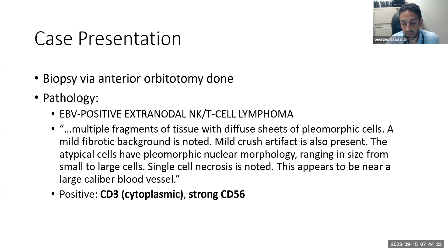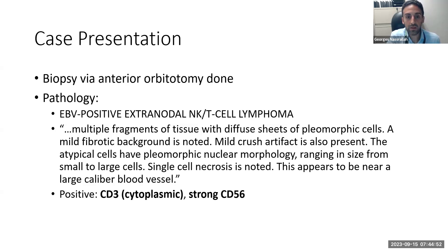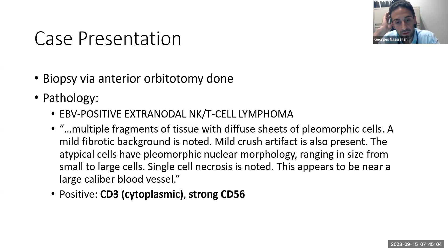ENT recommended an orbital approach for biopsy given the proximity to skin and concern for necrotic change in the nasal cavity. With the help of a PGY3 resident, the lesion was biopsied and pathology came back as Epstein-Barr virus-positive extranodal NKT cell lymphoma — not the usual standard lymphoma seen in the orbit. Microscopy showed pleomorphic cells, small and large cells, single cell necrosis, and immunohistochemistry including strong CD56 positivity helped consolidate the diagnosis.